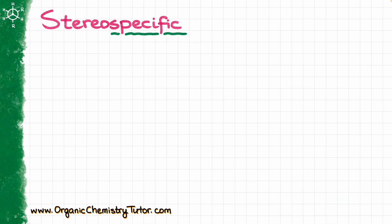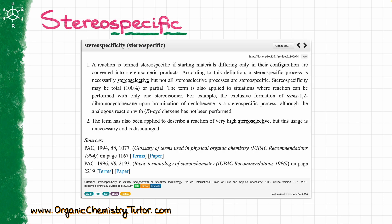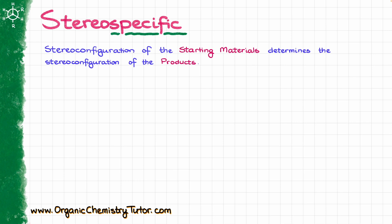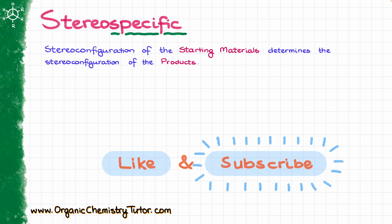Now when it comes to stereospecific reactions, things are a little bit more interesting. The official definition states that whenever we have a stereospecific reaction, we are going to have starting materials that differ in configuration, and that is going to give you different stereoisomeric outcomes. The definition also says that if a reaction is stereospecific, it is going to be stereoselective as well — I have a little bit of a problem with this part of the definition and I'll explain why in a moment. Translating that from awkward to English: in the case of stereospecific reactions, the stereoconfiguration of the starting material is going to determine the stereoconfiguration of our products.